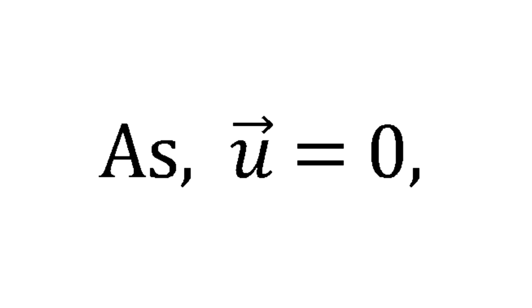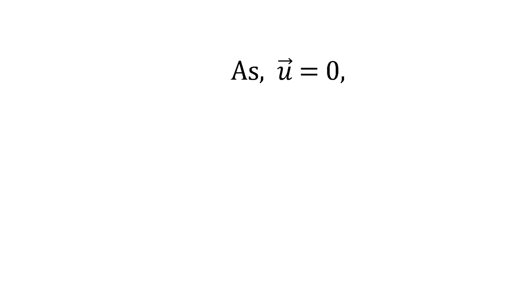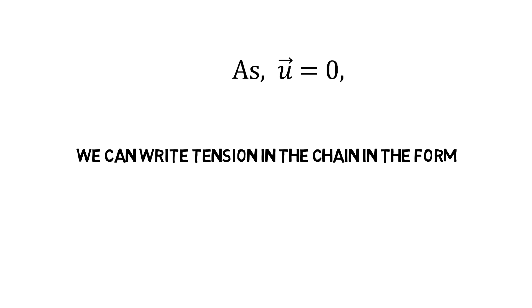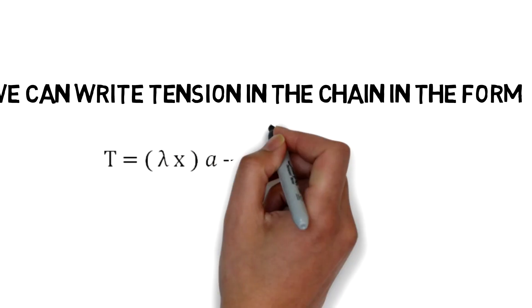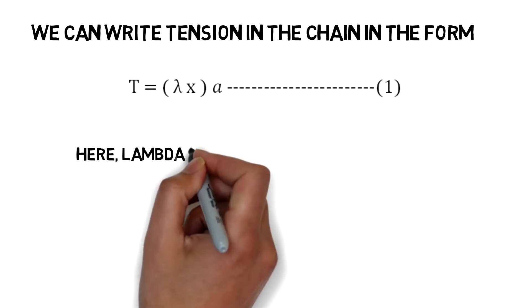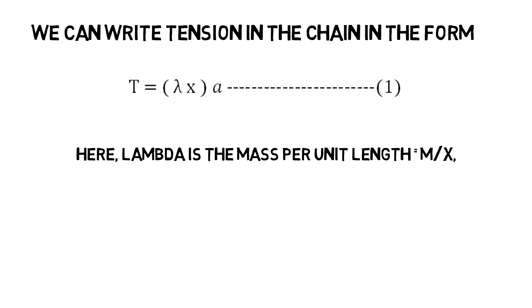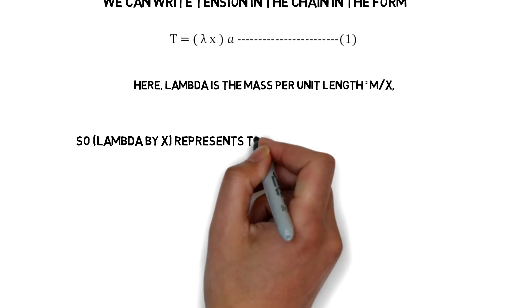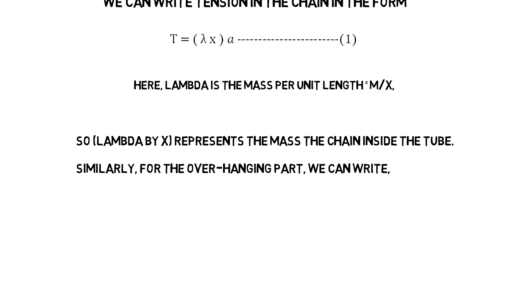Now for our problem u = 0. So we can write the tension in the chain in the form T = lambda x a. Here lambda is the mass per unit length which is equal to m by L. So lambda x represents the mass of the chain inside the tube.